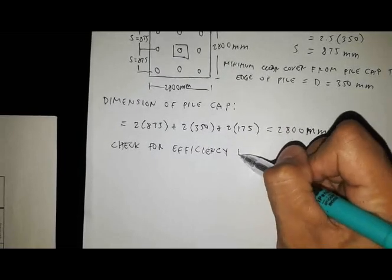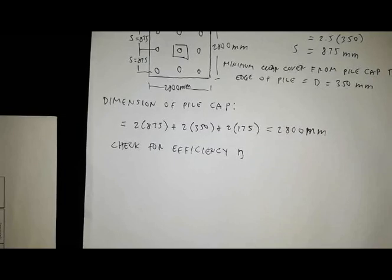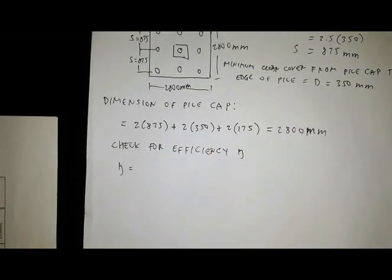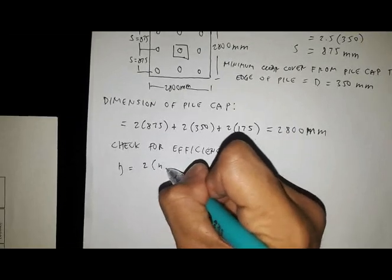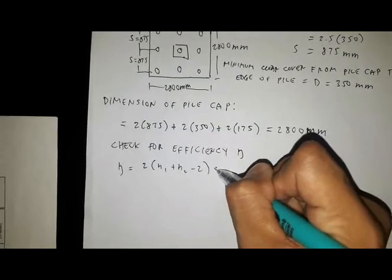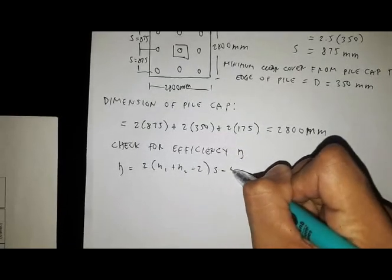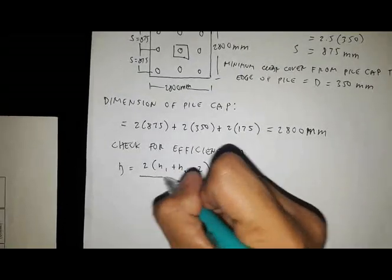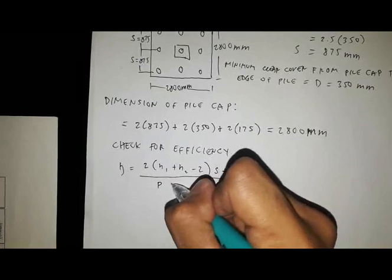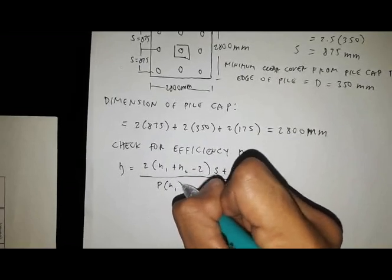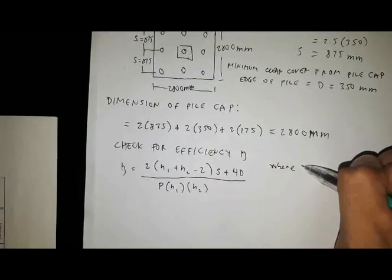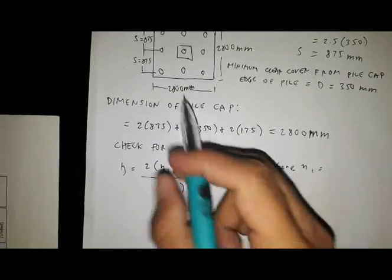Now let's check for efficiency. The efficiency of the group piles is given by this formula. We have efficiency equals 2 times (N1 plus N2 minus 2) times S plus 4D divided by the perimeter of pile times N1 times N2, where N1 equals 3 and N2 also equals 3.